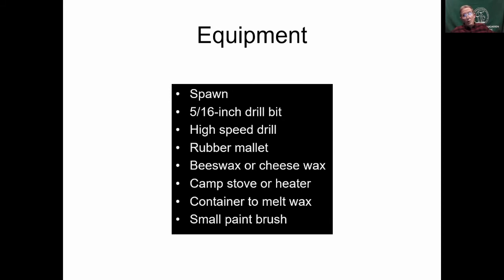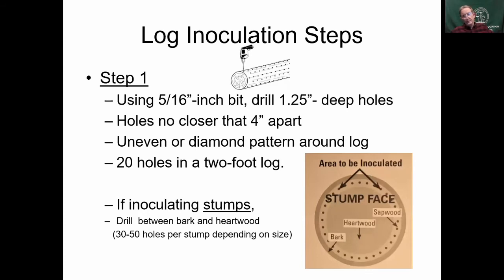Equipment needed is minimal: spawn — either grown yourself or purchased, it's not expensive — comes in dowels. You need a drill bit sized for those dowels, a rubber mallet to pound them in, and wax to cover the holes so nothing else gets in. You also need a container to melt wax in, a heat source, and a paintbrush to apply the wax.